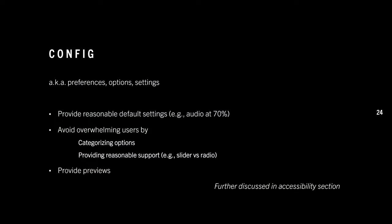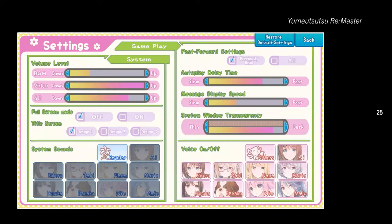Finally, let's talk about the config screen. Your player should not be spending too much time here — you're trying to make them read a visual novel, not play a configuration screen simulator. Provide reasonable default settings so they don't have to change everything. For example, don't have audio blasting at 100 on load; set it to around 50 or 70. Avoid overwhelming users by categorizing options logically and providing reasonable levels of support — not everything needs a slider; some things can be radio buttons or toggles.